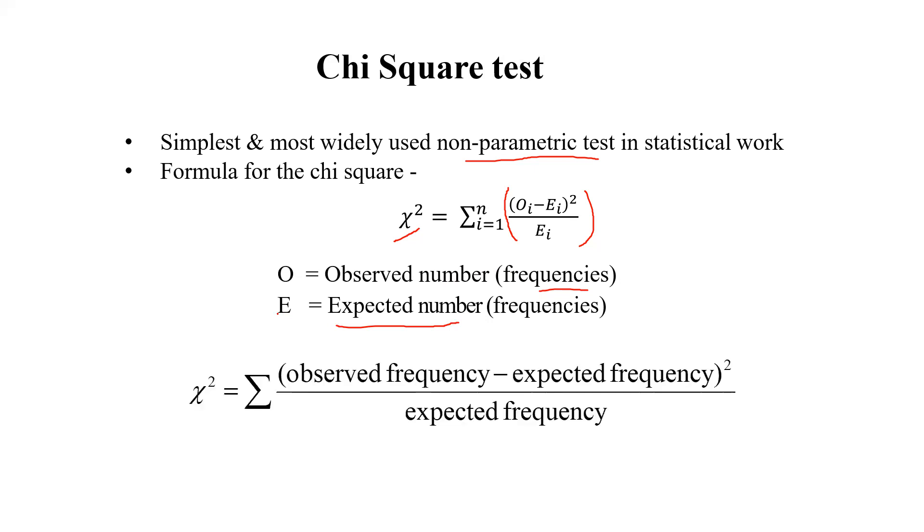So how we'll get the expected number? There is one formula which is summation of (observed frequency minus expected frequency) divided by expected frequency.